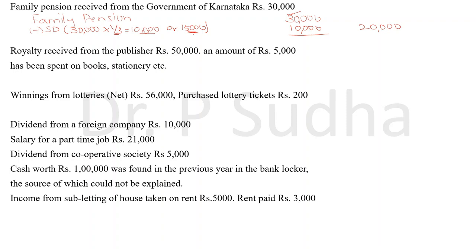Family pension is very simple and easy. Whatever amount is given as family pension, write it in the inner column. For the standard deduction, calculate 1/3 of the pension amount, compare that answer with 15,000, and whichever is less, bring it to the inner column and deduct it. Then bring the final answer to the outer column — that is the taxable family pension.